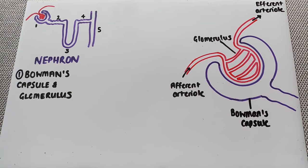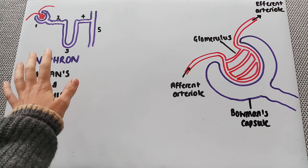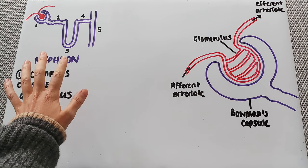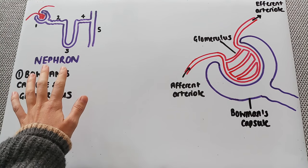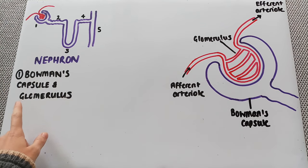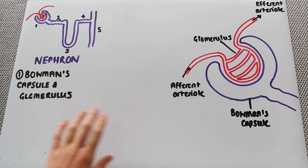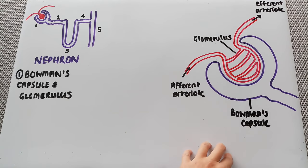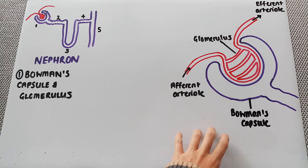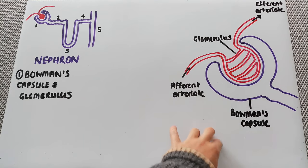In this video we're going to look at the different sections of the nephron and what specifically happens in each of those different sections. We're going to start right at the beginning with number one on our diagram of the nephron. This is what we've already labeled in a previous video — number one is the Bowman's capsule and the glomerulus, which is drawn in more detail and labeled as we have done in our diagram before.